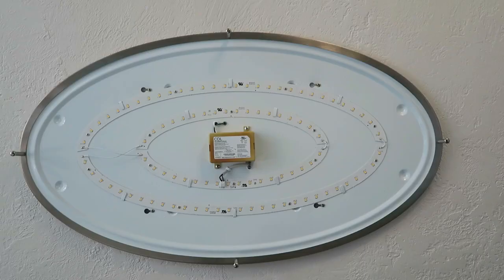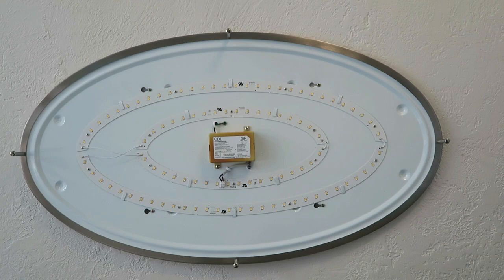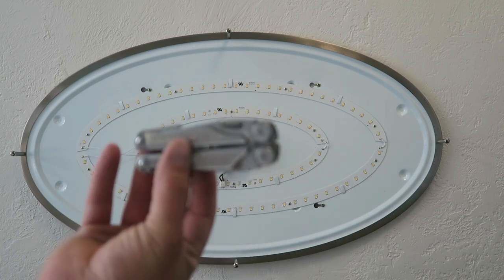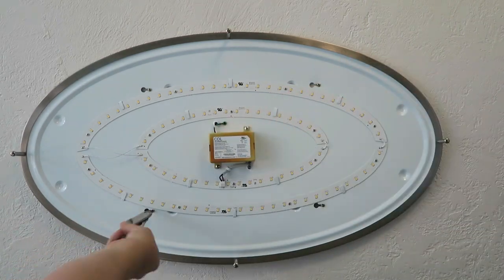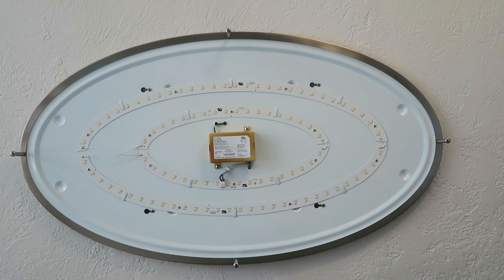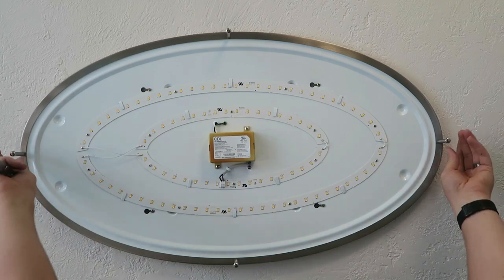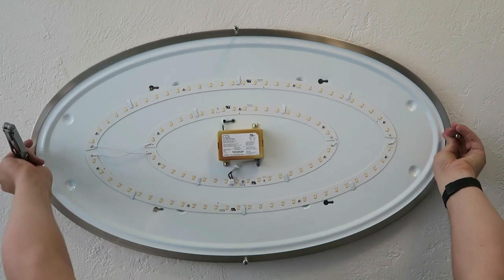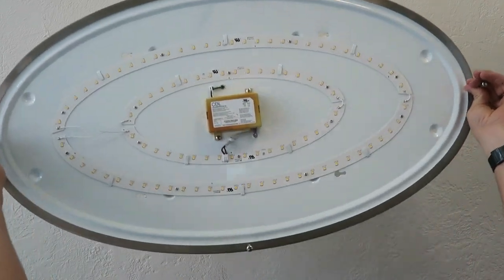Now that I've got the breaker flipped off, I can loosen these screws that are holding it to the ceiling. For that, I'm going to use my Leatherman pliers. Now that I've loosened all these screws, I can slide this unit and it will come down from the ceiling.